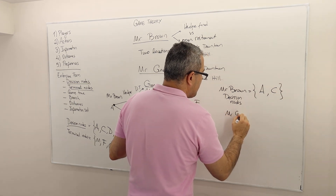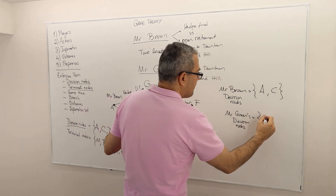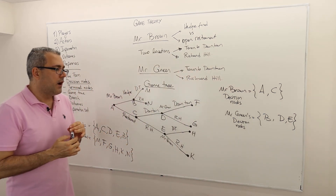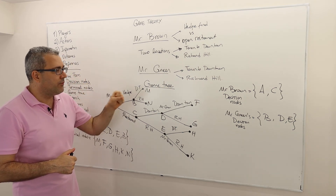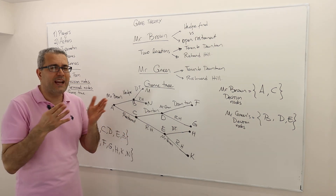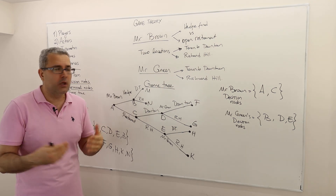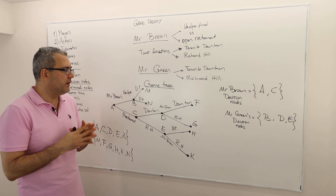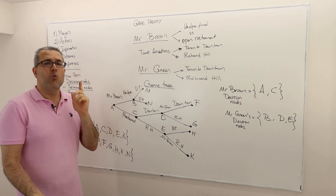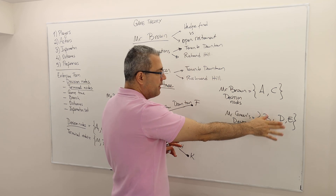Mr. Green's decision nodes are B, D, and E. One important thing to notice: when we draw a game tree, we do not use the same decision node for two players. A decision node belongs to one and only one person — that is a rule when constructing a game tree.